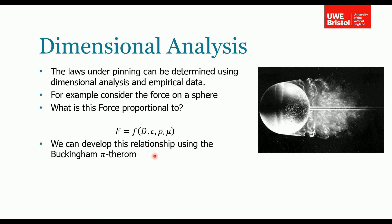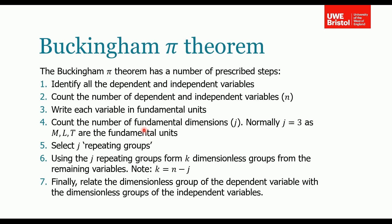I'm going to go through the Buckingham-Pi theorem step by step. First, we need to identify all the dependent and independent variables. We count them — that gives us number n. We write each variable in fundamental units, then count the number of fundamental units, which is j. Normally for most analyses j will equal 3, as mass, length, and time will appear in our fundamental units.